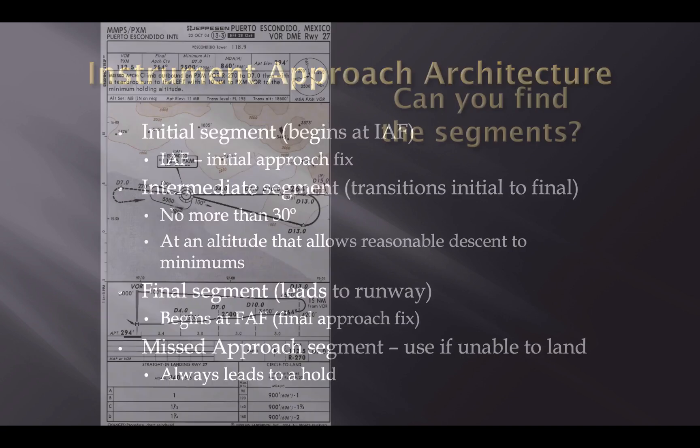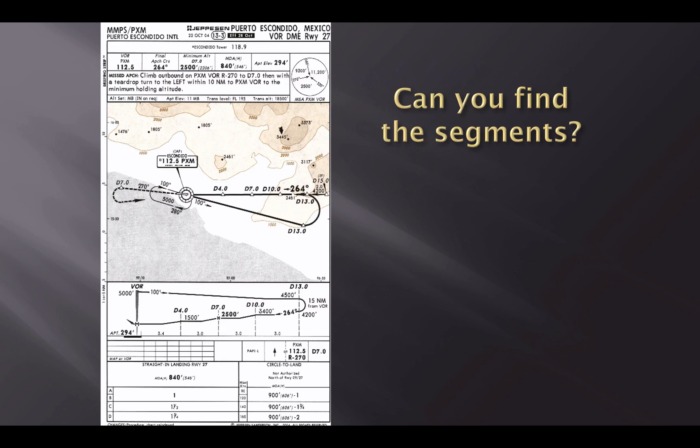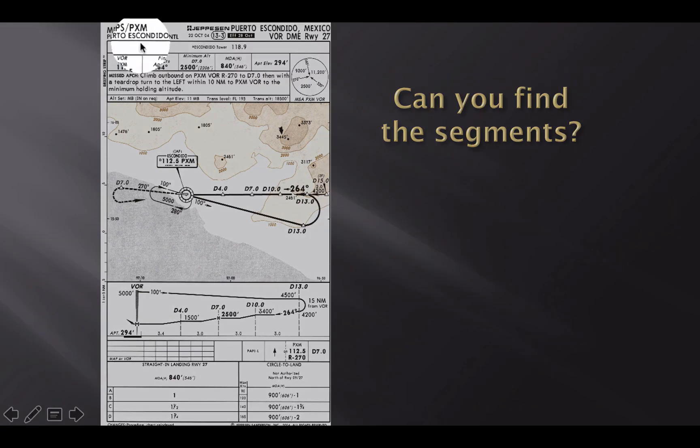So let's take a look at this in a more practical sense, and once we walk through this a little bit, it kind of helps get us more familiar with the segments on an approach. So, can you find the different segments to this approach into PXM, VOR DME 27 in Mexico?